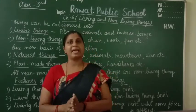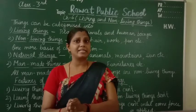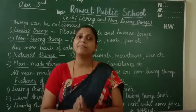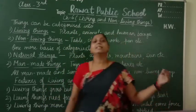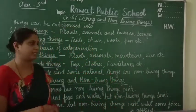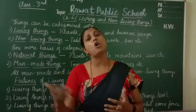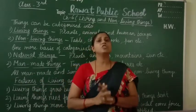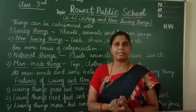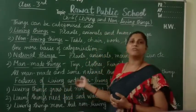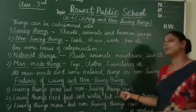So, all man-made things and some natural things are non-living. Plants, animals, insects — these are all natural things and they are living things. Now I am repeatedly saying that living things show certain characteristics. So let us talk about these characteristics. The first characteristic: living things grow but non-living things do not.